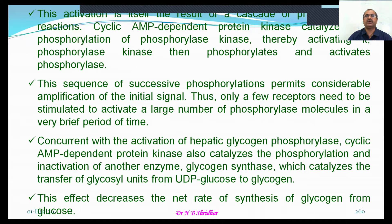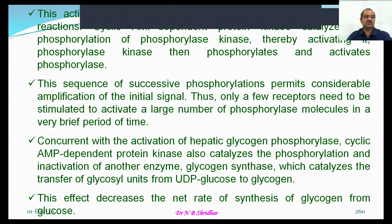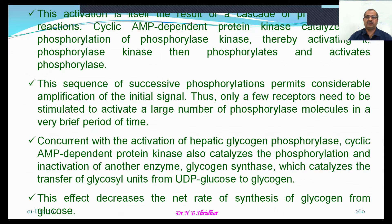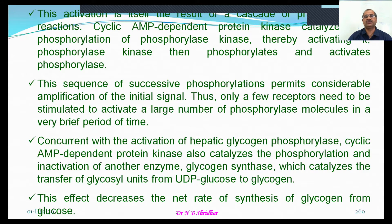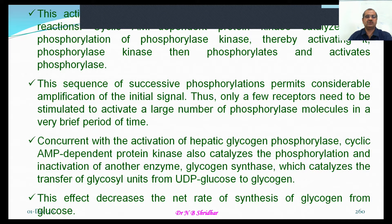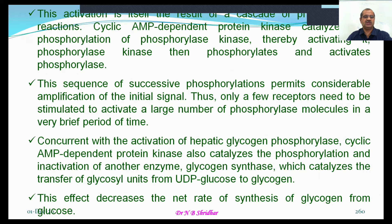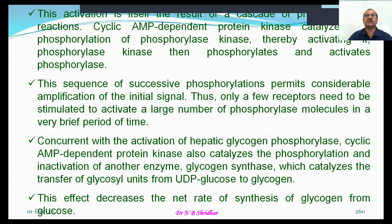We understand that all these receptors need not be activated by norepinephrine directly. Instead, only a few receptors may be activated by a specific transmitter to initiate post-junctional activity. Concurrent with the activation of hepatic glycogen phosphorylase, cyclic AMP-mediated protein kinase also catalyzes the phosphorylation and inactivation of glycogen synthase, the enzyme that catalyzes the transfer of glycosyl units from UDP-glucose to glycogen. So there is concurrent stimulation of hepatic glycogen phosphorylase and inhibition of glycogen synthase, ultimately catabolizing the body's store of glucose from the liver as glucose-1-phosphate.